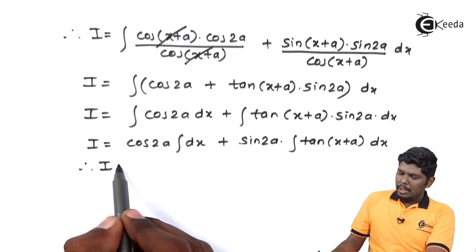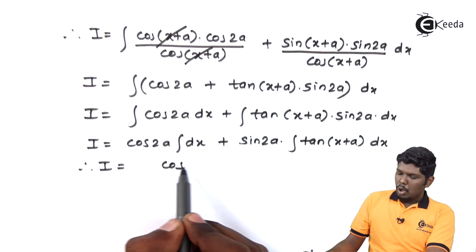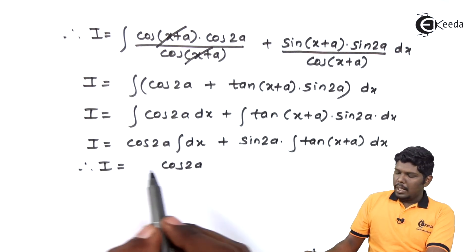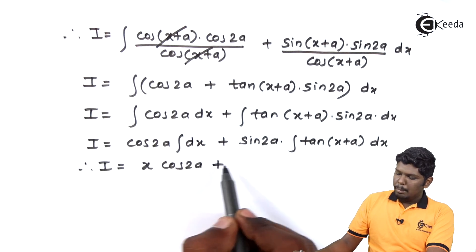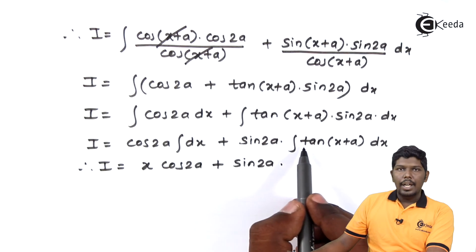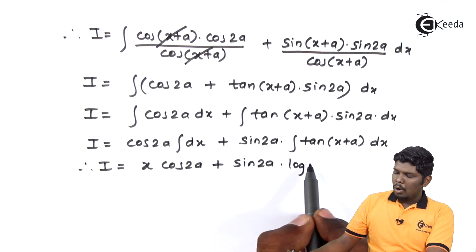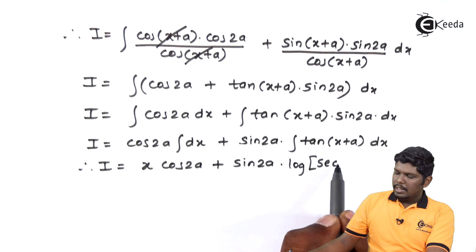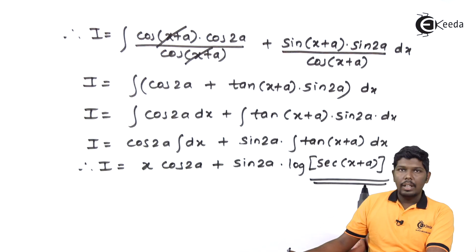Therefore, I is equal to cos 2a times x plus sin 2a into log of sec(x+a) plus c. This is our final answer.